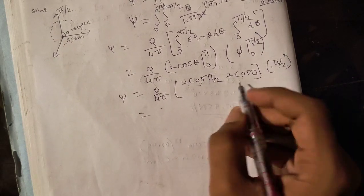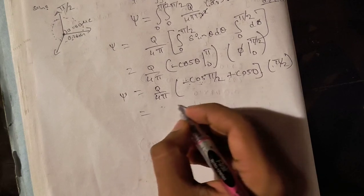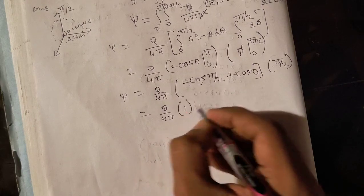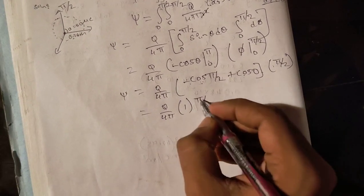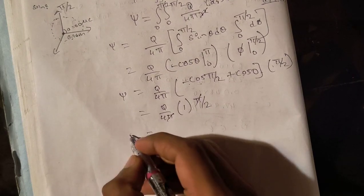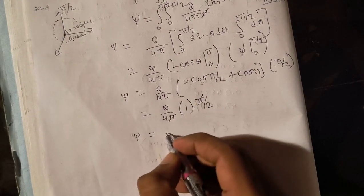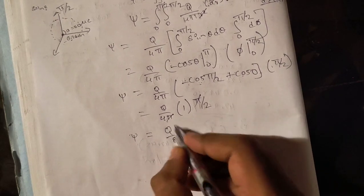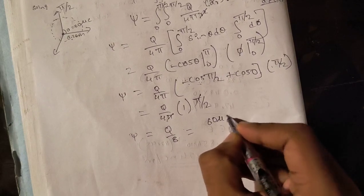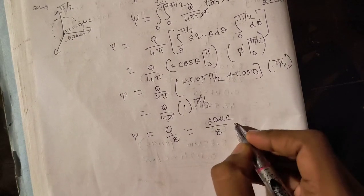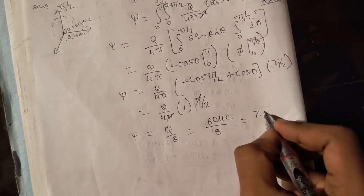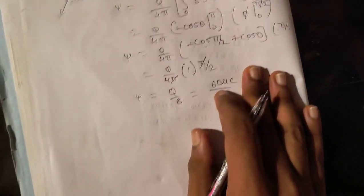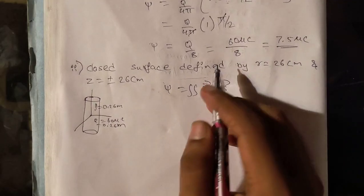Integration of φ is φ only. Ψ equals Q by 4π. Substitute integral limits: cos π/2 is 0, cos 0 is 1. Then this becomes 1, and π/2 as it is. Here π and π get cancelled. Then our answer is Q by 8. Q value is 60 microcoulomb divided by 8, that is 7.5 microcoulomb.